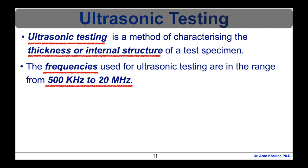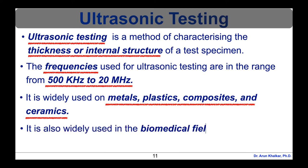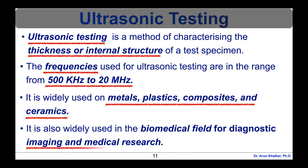What sort of materials can be tested with ultrasonic testing? In industrial applications, ultrasonic testing is widely used on metals, plastics, composites and ceramics. The only common engineering materials that are not suitable for ultrasonic testing with conventional equipment are wood and paper products. Ultrasonic technology is also widely used in the biomedical field for diagnostic imaging and medical research.